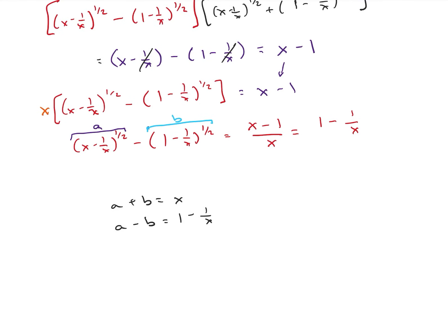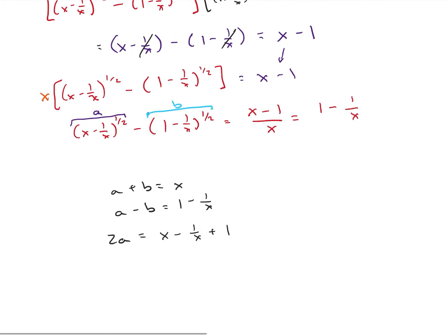So, let's add those two equations and I get 2a is equal to x minus 1 over x plus 1. And if I remember what a was, so I get 2 times x minus 1 over x to the 1 half equals x minus 1 over x plus 1.